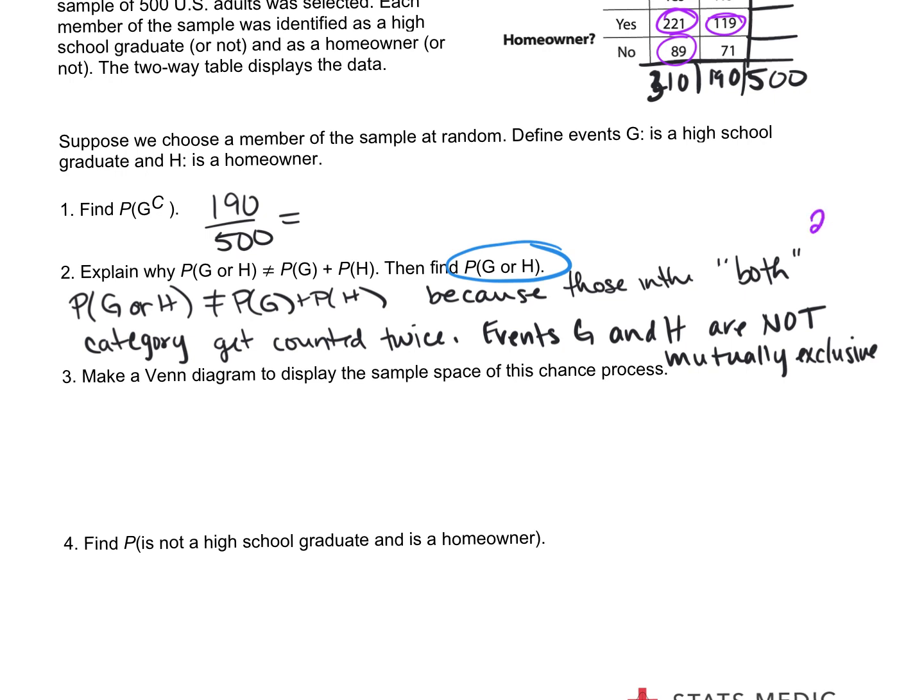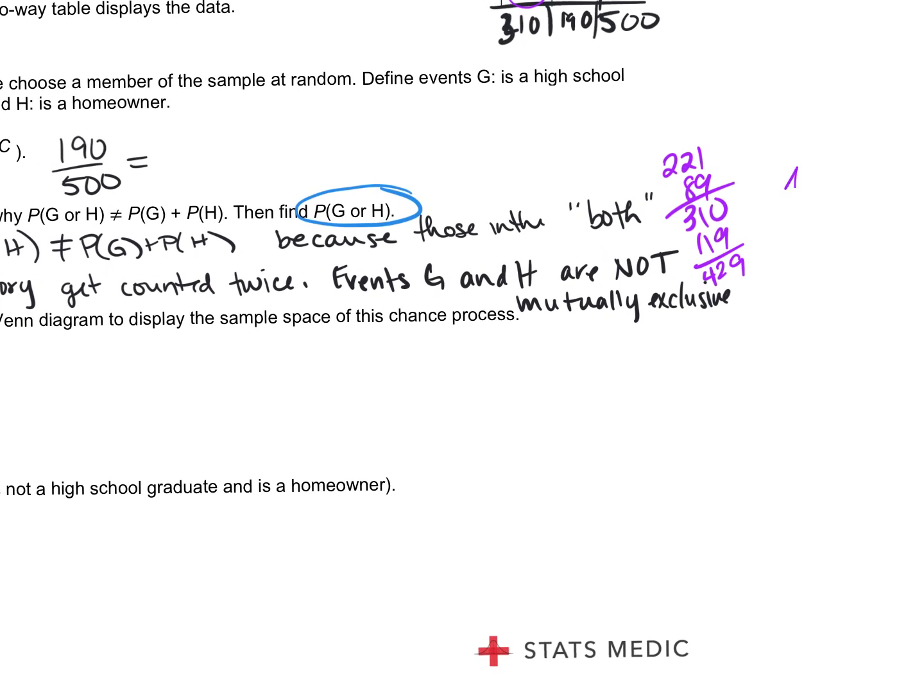So when we add that up, that's 310 plus 119 is 429 out of 500 and whatever that decimal gets you.